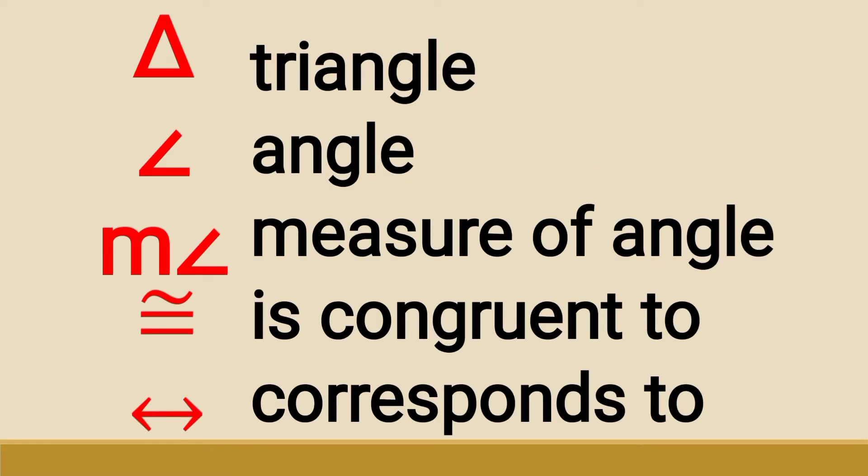Here are the symbols we will see in the following discussion. The first figure is the triangle. We also have the angle symbol, the measure of an angle, the symbol that is read as 'is congruent to,' and the last symbol which reads as 'corresponds to.'